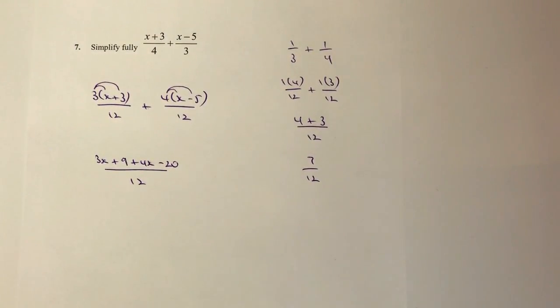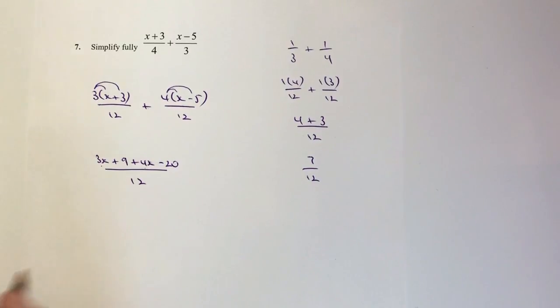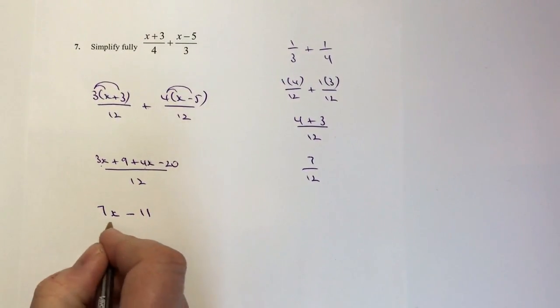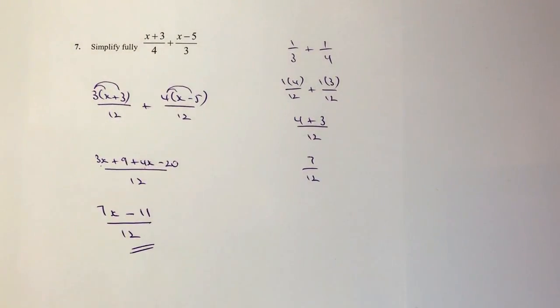Okay, so then I can gather up the like terms and put everything together. I've got 3x and 4x there, so I'm going to write that as 7x. And then I've got plus 9 minus 20, so that's going to be minus 11. And that's all over 12. That will answer this particular question.